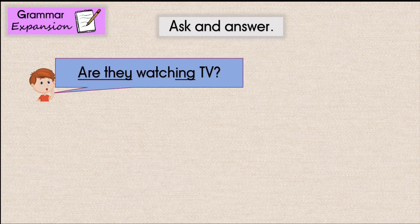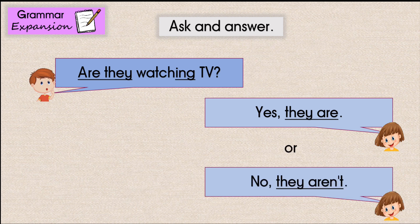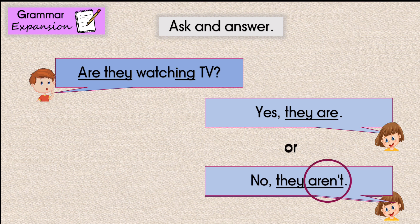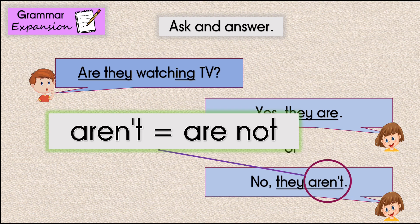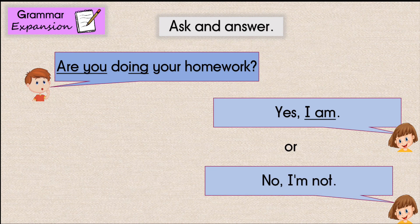Let me show you some other examples. Are they watching TV? Yes, they are. If you want to say no, you say: No, they aren't. 'Aren't' is the short form of 'are not'. Are you doing your homework? You can answer: Yes, I am. Or, No, I'm not.